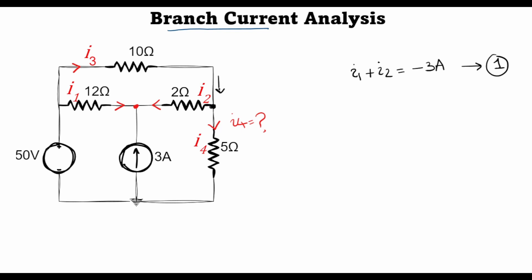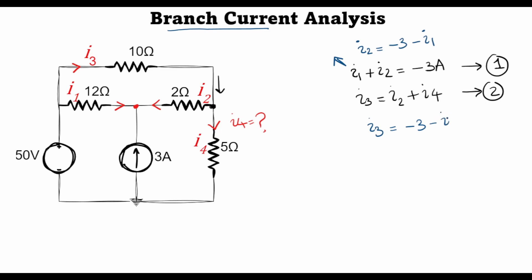Applying KCL at the second node, where I3 is entering and I2 and I4 are leaving, I can write: I3 equals I2 plus I4. This is equation 2. I can eliminate I2 from equation 1 by writing I2 as minus 3 minus I1, giving us: I1 plus I3 minus I4 equals 3. This is equation 3.